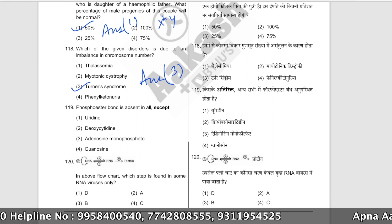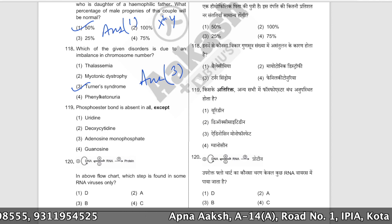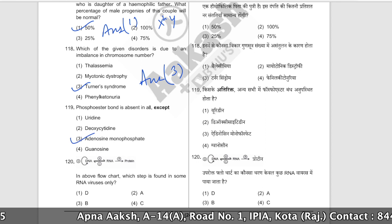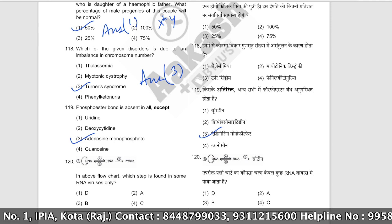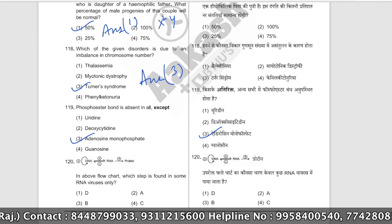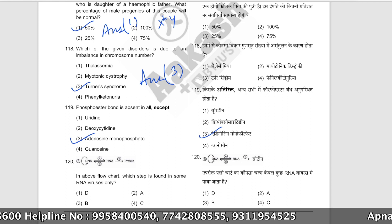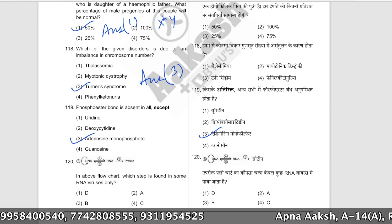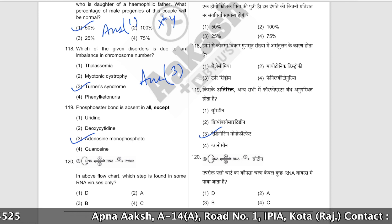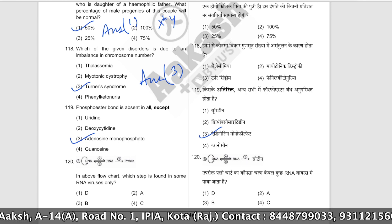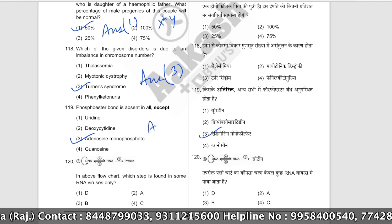Phosphoester bond is absent in all except which one? Phosphoester bond is absent in most options; it is present only in adenosine monophosphate (AMP) — because in AMP there is only one phosphate group attached. Uridine, deoxyadenosine, guanosine — these single nucleotides don't form phosphoester bonds between phosphates. The correct answer is option number three.